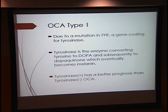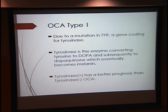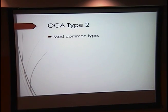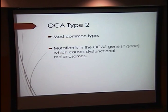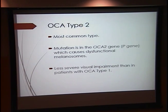There are two subtypes: tyrosinase positive and tyrosinase negative. Tyrosinase positive individuals have some tyrosinase activity, therefore some melanin, and an overall better prognosis, whereas tyrosinase negative individuals have very little to no tyrosinase activity. OCA type 2 is the most common type; it's due to a mutation in the OCA2 gene, formerly known as the P gene, which causes dysfunctional melanosomes and has less visual impairment than OCA type 1.